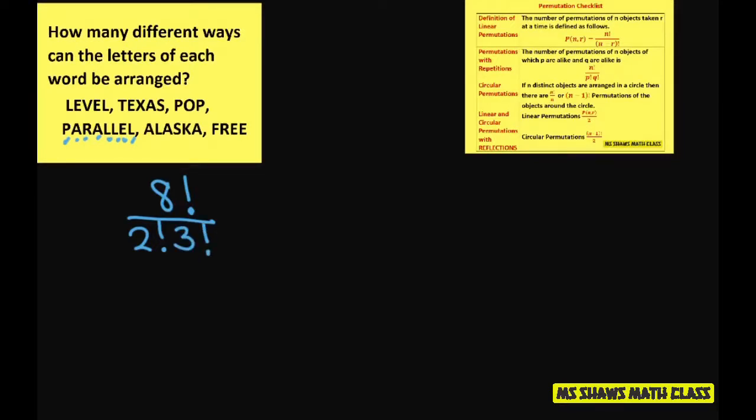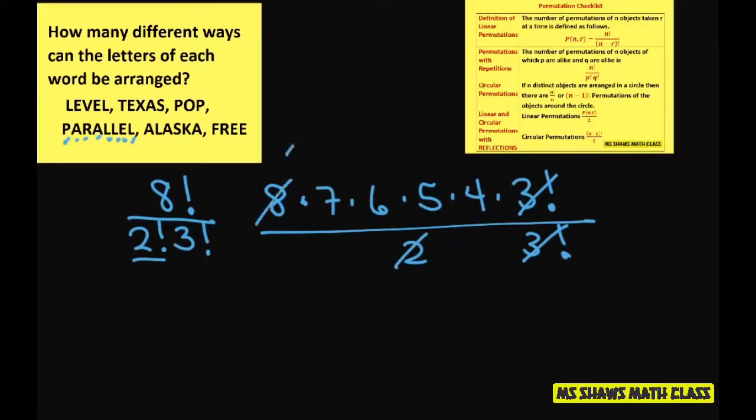Now when you write this out, we're going to get, the best way to write it out is write 8 times 7 times 6 times 5 times 4 times 3 factorial, and then I write this 3 factorial, and we still have 2 factorial. 2 factorial is just 2. And then you cross these out. And you could say 2 goes into 8, 4 times. And then you can multiply this out. This is going to be 3,360.